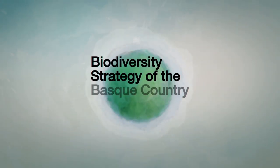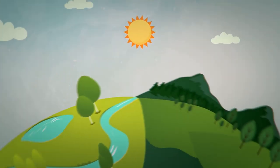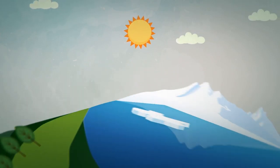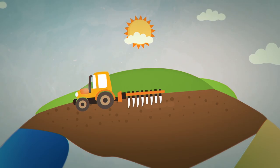Biodiversity Strategy of the Basque Country to 2030. Biodiversity includes everything that lives on our planet. It is the variety of species and habitats that are the result of millions of years of evolution, shaped by natural processes and increasingly by human influence.